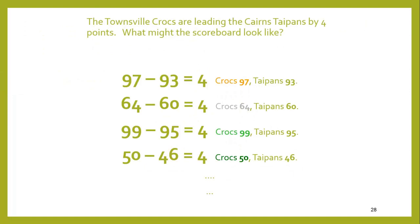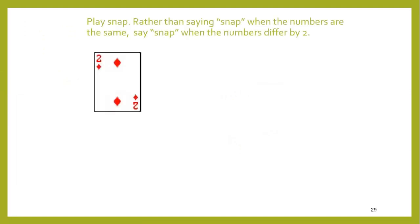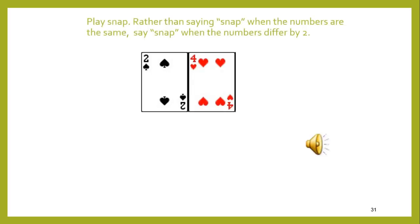Again, we can get every student involved — not just having the bright student at the back answering every question. There's not just one right answer; there are multiple possible answers and each student in the class can come up with their own individual solution. We can also play snap — normally we say snap when two cards match, but if we do it when numbers differ by two, then we say snap when appropriate.